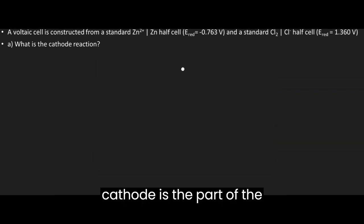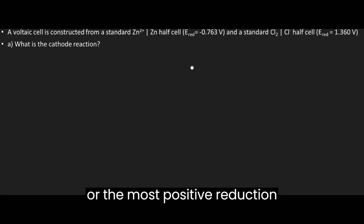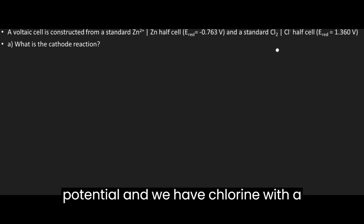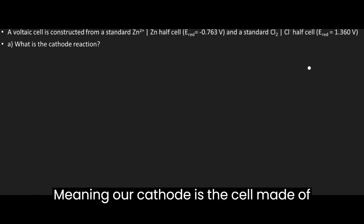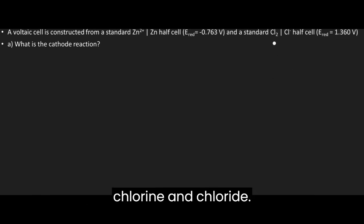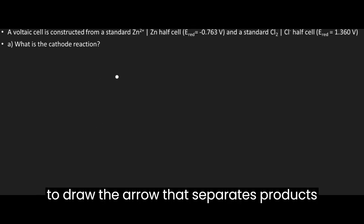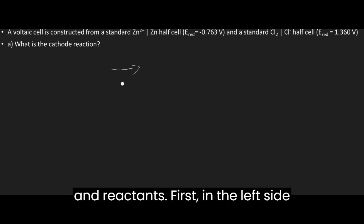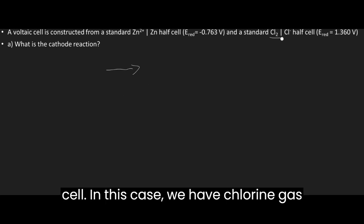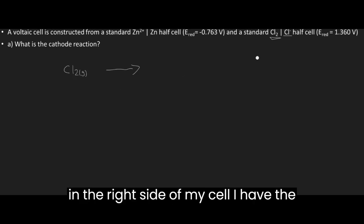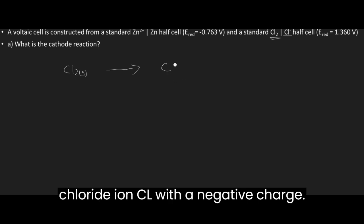For question one, the cathode is the half cell with the greatest or most positive reduction potential. Zinc has a negative potential and chlorine has a positive potential, so our cathode is the chlorine/chloride cell. Writing this reaction: on the left (reactant) side we place Cl₂ gas, and on the right (product) side we have the chloride ion Cl⁻.